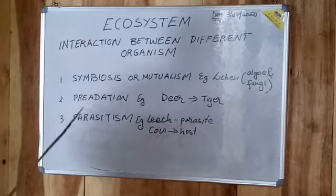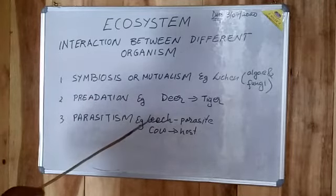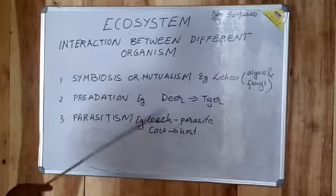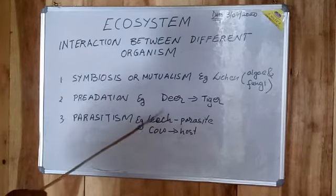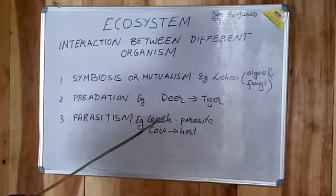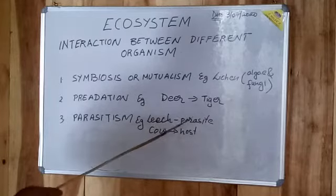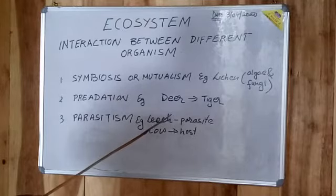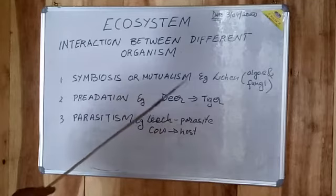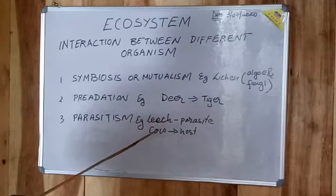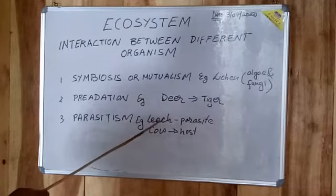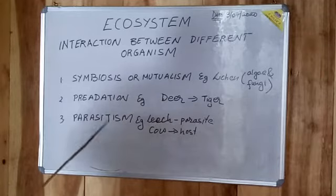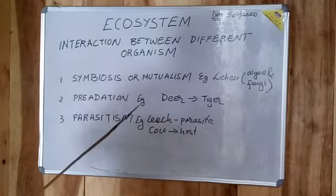The third one is known as parasitism, in which a leech and a cow live together. The leech lives inside the body of a cow, in the intestine. The leech is called a parasite and the cow is called the host. The cow loses because most of the food that is being digested is eaten by the leech, but the leech benefits. This is known as parasitism.